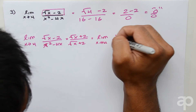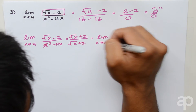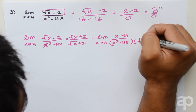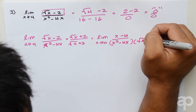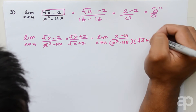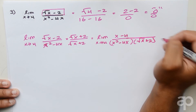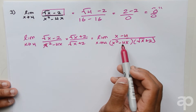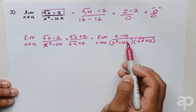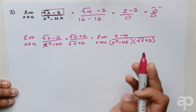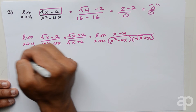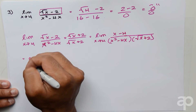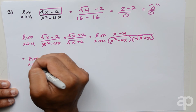After multiplying by the conjugate and simplifying, we get the limit as x approaches 4 of x minus 4 over x squared minus 4x times the quantity square root of x plus 2. At this point we should factor out the x in the denominator.